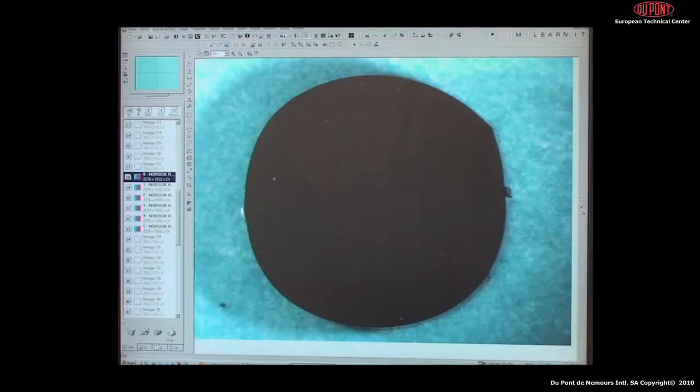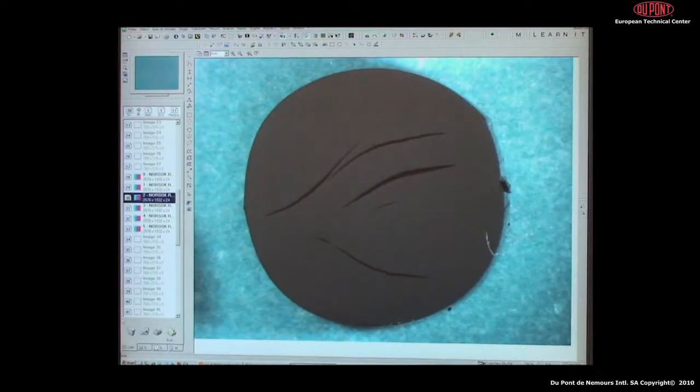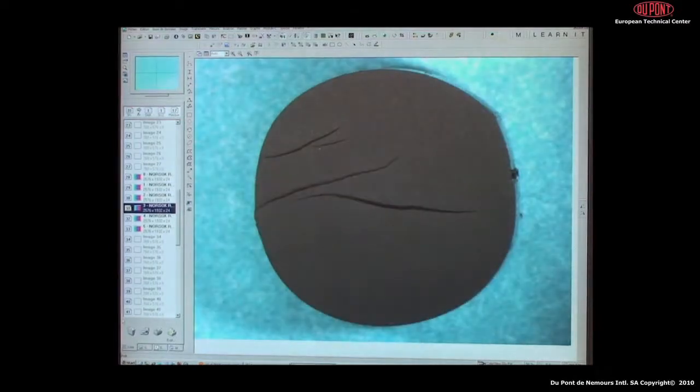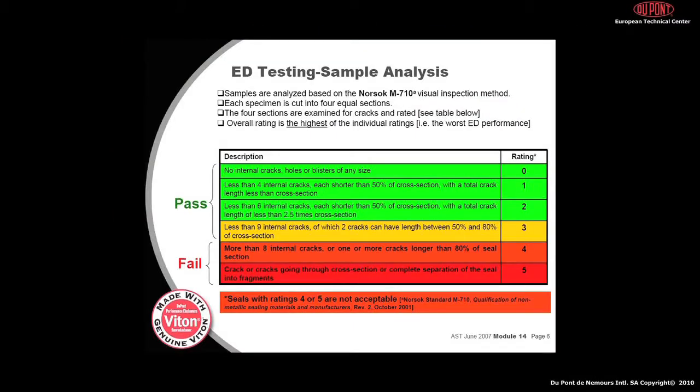The best rating is 0 if there are no cracks at all. Ratings of 1 to 3 where a few minor cracks are observed are still accepted. Ratings between 4 and 5 are rejected because they have too many large cracks or are even broken.